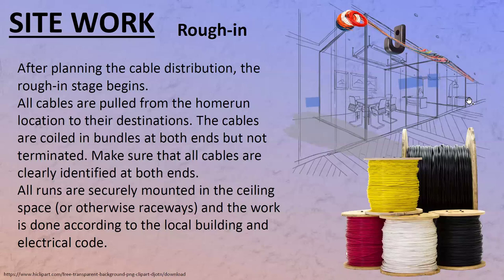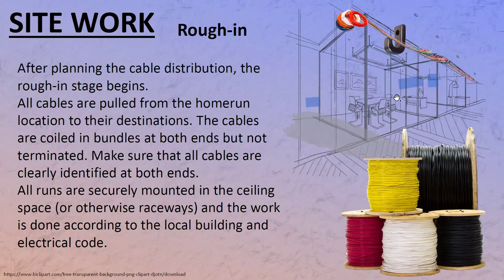You pull the wires to each room location — say a room that needs a few jacks — you bring those wires above the ceiling and coil them up. Sometimes if it makes sense you run them down the wall, but usually you just bring them to the location and coil them in the ceiling. It's called the rough-in stage.